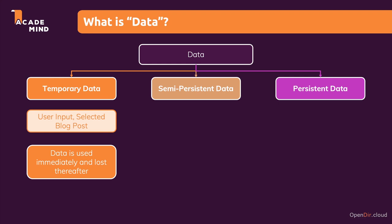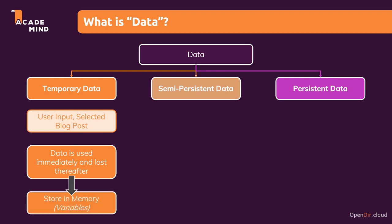We often have such temporary data in applications, and it is just stored in memory — in variables. We extract some data, store it in a variable inside of a method or a function, do something with it throughout that function, and then once we're done with the function execution, the variable is no longer referenced or used anywhere else, and hence it's automatically cleared after some time. This is the kind of data we've worked with thus far in the course, because we only worked with variables up to this point.